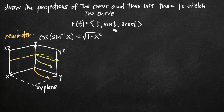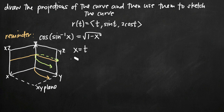When it comes to identifying the projections of our vector function r, we want to treat each of these components as parametric equations. The x component is t, so x equals t. The y component is sine of t, so y equals sine of t. And the z component is 2 cosine t, so z equals 2 cosine of t. These are now the parametric equations of our vector.